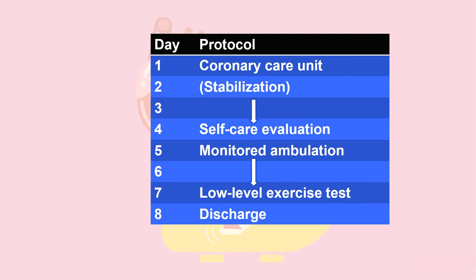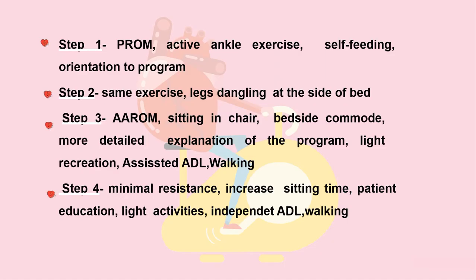The inpatient protocol: Day 1, patient is in the coronary care unit. Day 2–3, patient is stabilized and a few exercises are started. Day 4, self-care evaluation is taught. Day 5–6, ambulation is monitored. Day 7, low-level exercise tests are done and mild exercises are started. Day 8, patient is discharged.